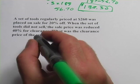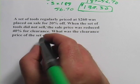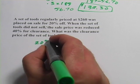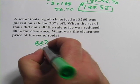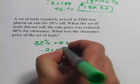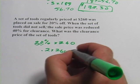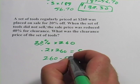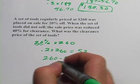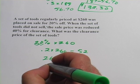So let's do this in two steps. First, we take 20% off. So what's 20% of $260? That's .2 times $260, and that should be $52. So we take $260 and subtract the $52 from it, and we should get $208.